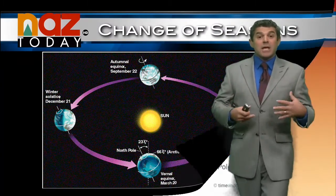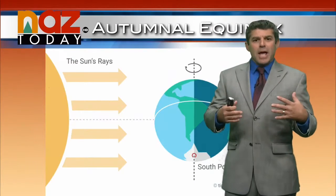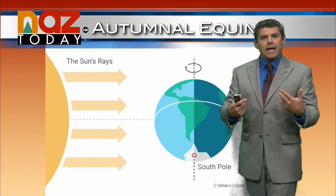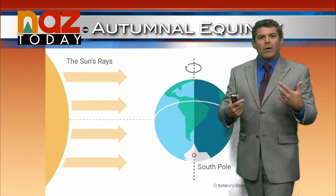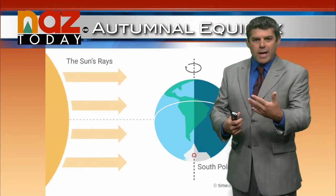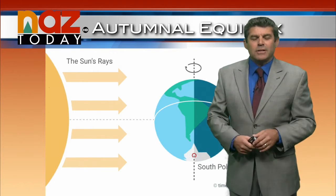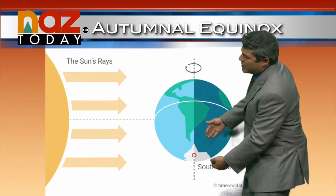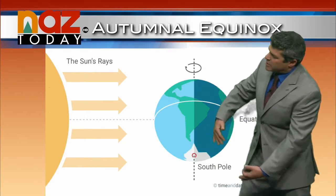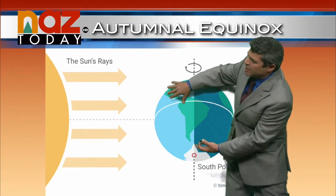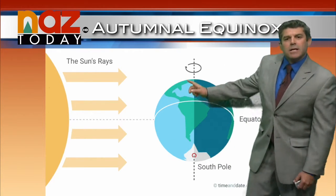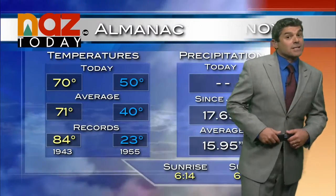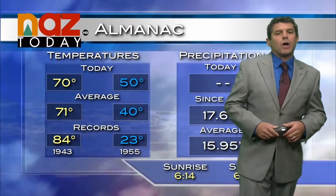So it's roughly equal days and equal nights across the entire planet tomorrow as the sun crosses the equator and journeys to the southern hemisphere. Notice equal days, equal nights across the planet. Tomorrow, the equinox — Latin for equal.